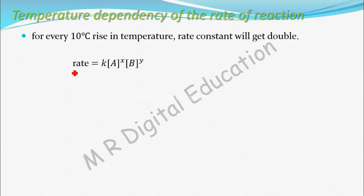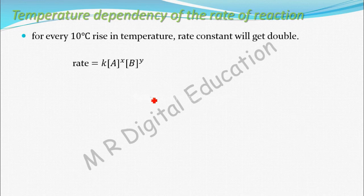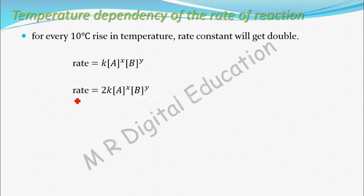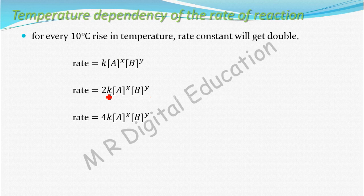This is the rate equation for a general reaction: rate = K × [A]^x × [B]^y. If you increase the temperature by 10 degrees Celsius, the rate constant will get double — that is, 2K. So the rate of reaction will also get double. Again, if you increase the temperature by another 10 degrees Celsius, the rate constant will get double again — 2 becomes 4. Double of 2 is 4, so the rate of reaction also increases to 4 times. For every 10 degree Celsius rise in temperature, the rate constant will get double.